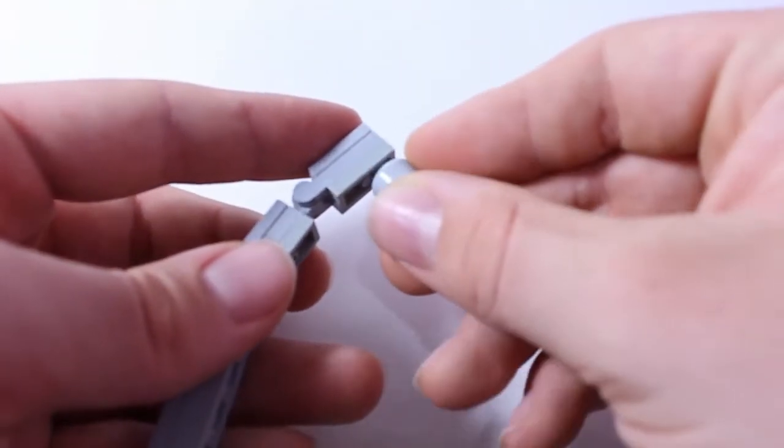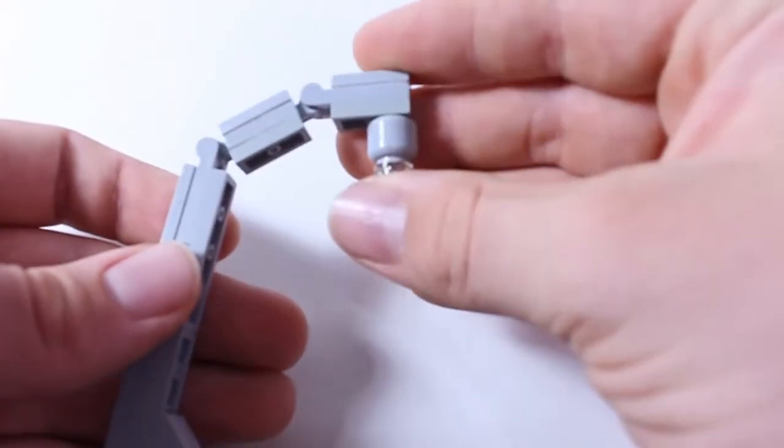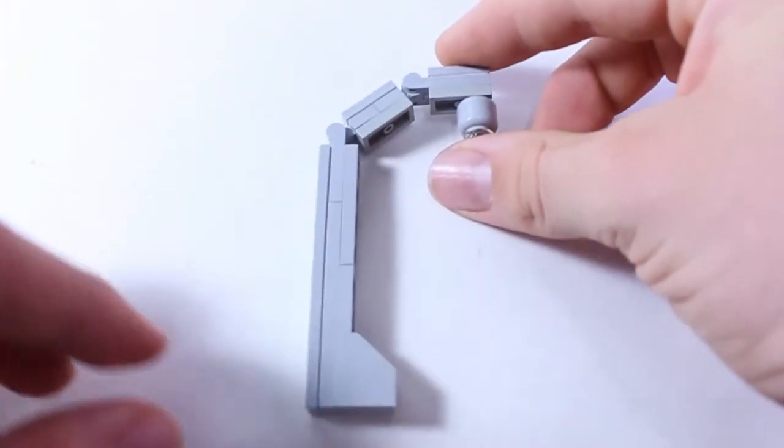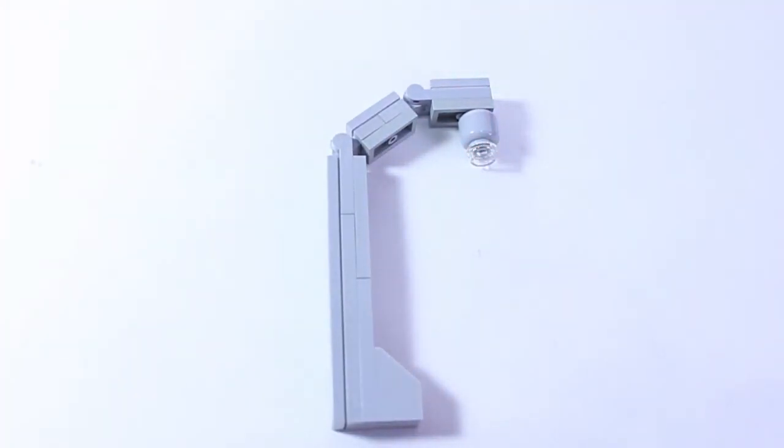And then on the bottom of the end one you want to have a head with a little transparent stud and then tiles all the way along the top and then a little 1x2 slope on the bottom.